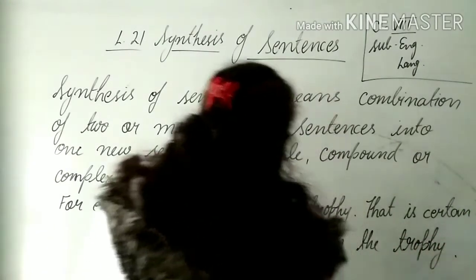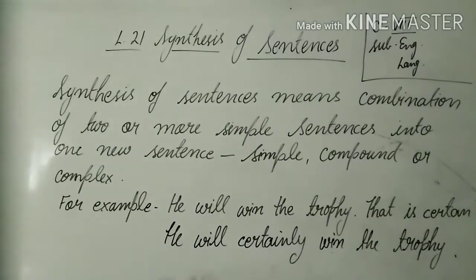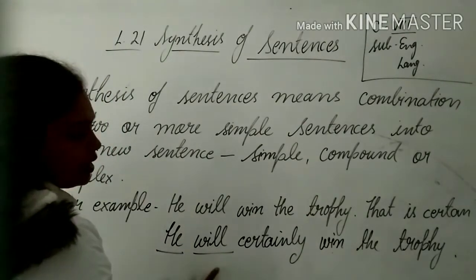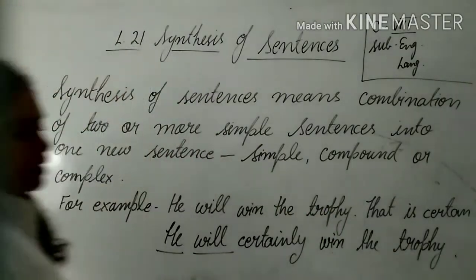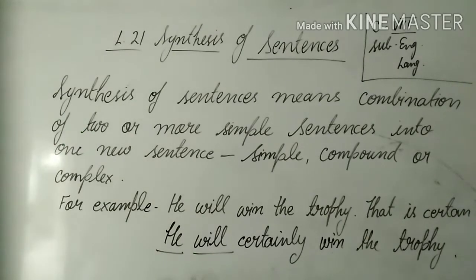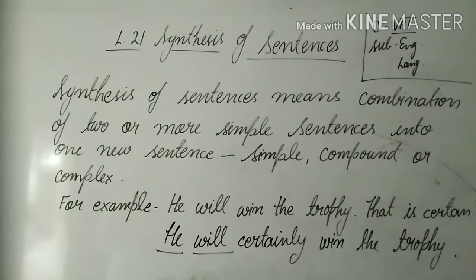He will certainly win the trophy. Now you see this changes into a simple sentence — because 'he' is our subject and 'will win' is our main verb. By joining the two sentences and using 'certain' as an adverb 'certainly', we formed one simple sentence according to the rule.